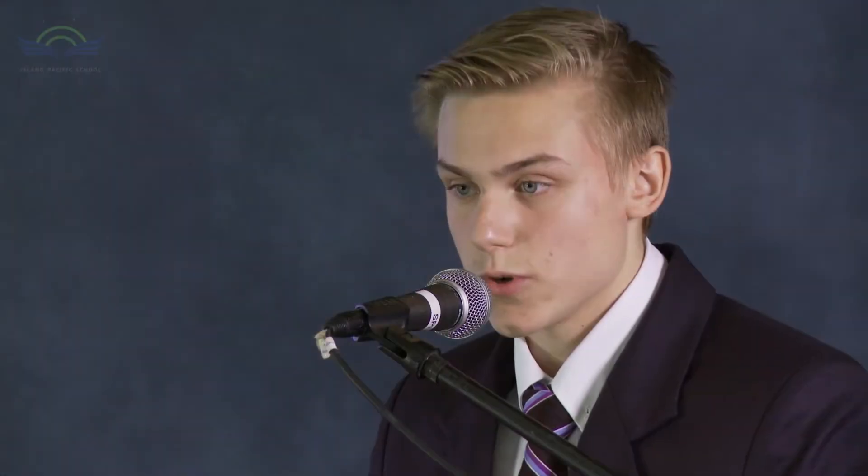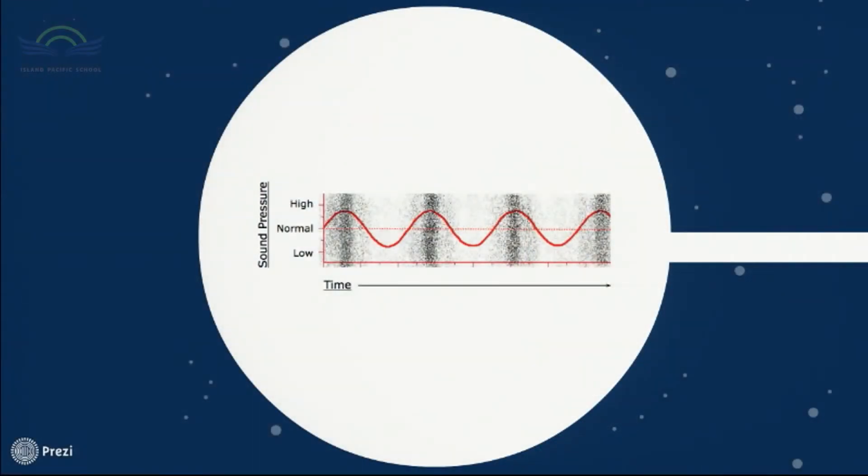We know that sound is made up of vibrations, but frequency can be broken down into two types of pressures. These two components are high pressures and low pressures. High pressure waves are commonly referred to as compressions, whereas low pressure waves are commonly referred to as rarefactions. To explain how these things work, I will use this simple simulator.